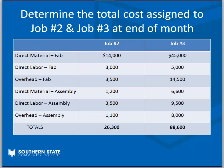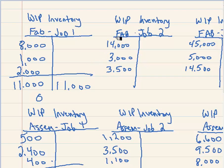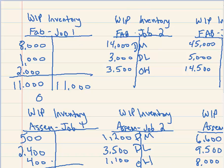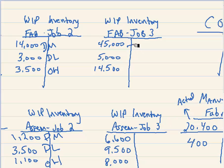Finally, the last part of the problem asks us to determine the total cost assigned to jobs two and three at the end of the month. We're done with job one; jobs two and three are still in process. We'll have material, labor, and overhead for fabrication and assembly for both jobs. Those numbers come directly from our T-accounts. For job two: fourteen thousand direct material in fabrication, three thousand direct labor, thirty-five hundred overhead; plus the assembly amounts for direct material, labor, and overhead. For job three similarly: direct material, labor, and overhead for the fab department and for the assembly department.